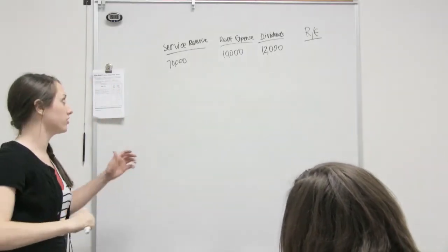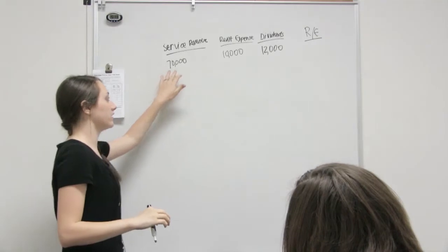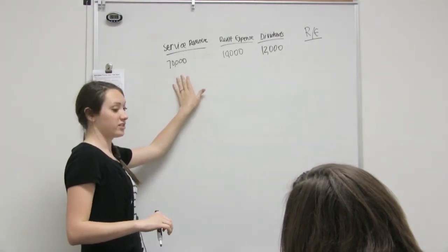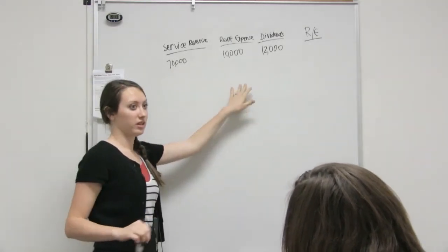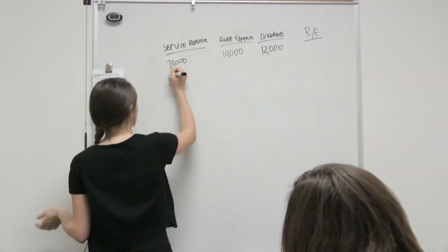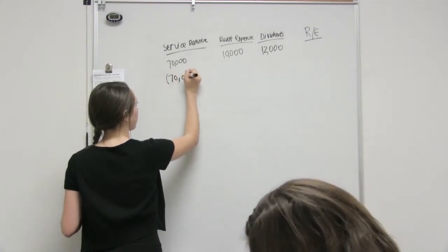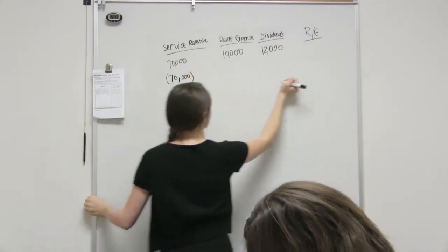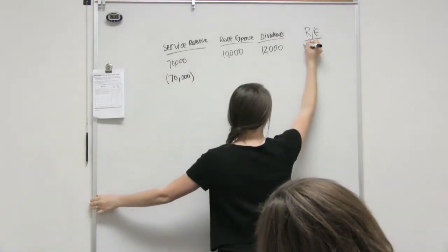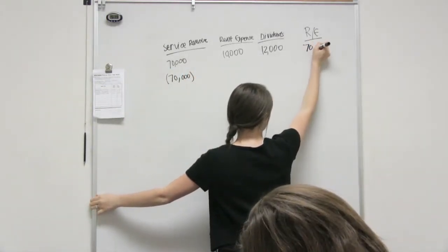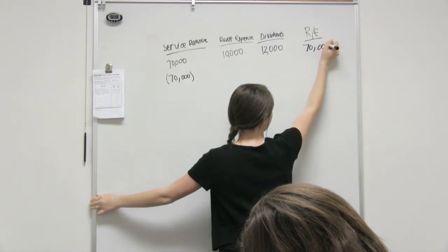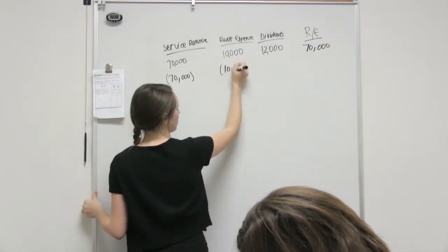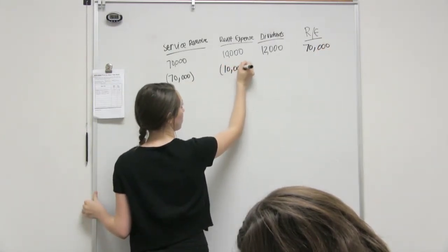To close it, all you're gonna do is subtract it from whatever account it is. So you'll just take the whole amount out and you'll just put it into your retained earnings. That's what you do for all of them.